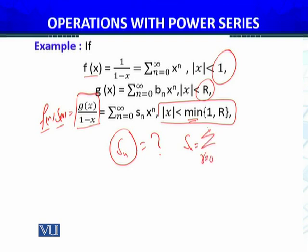The constant a_n is 1, so this becomes b_0 plus b_1 plus ... plus b_n. So s_n equals this.